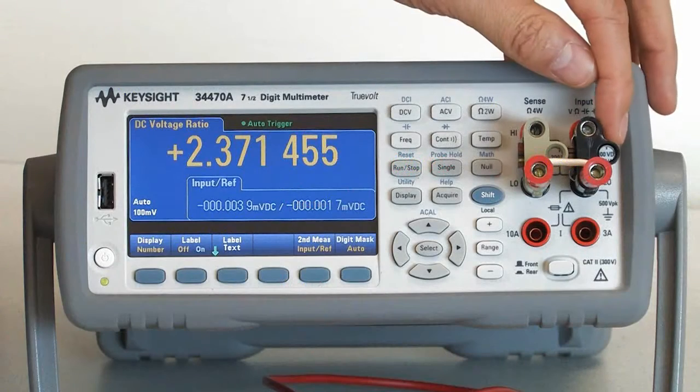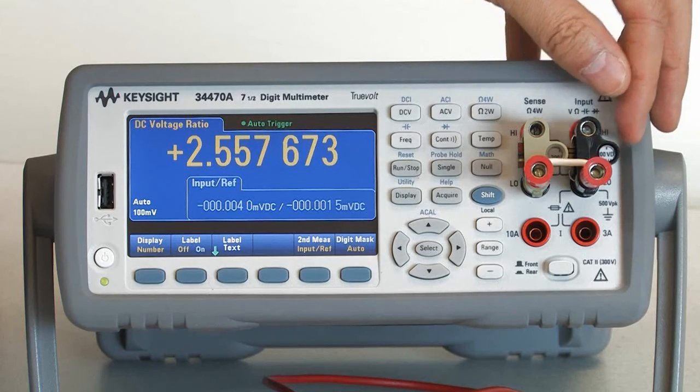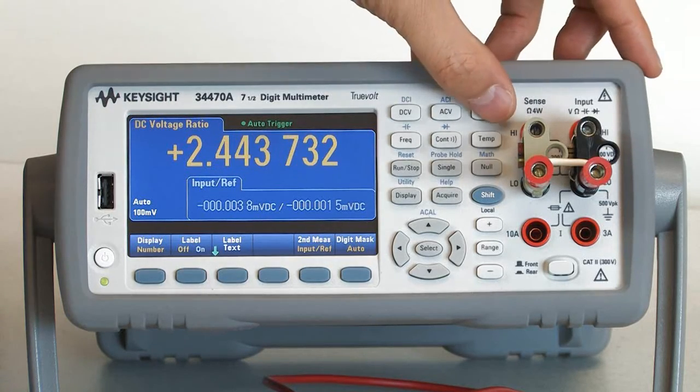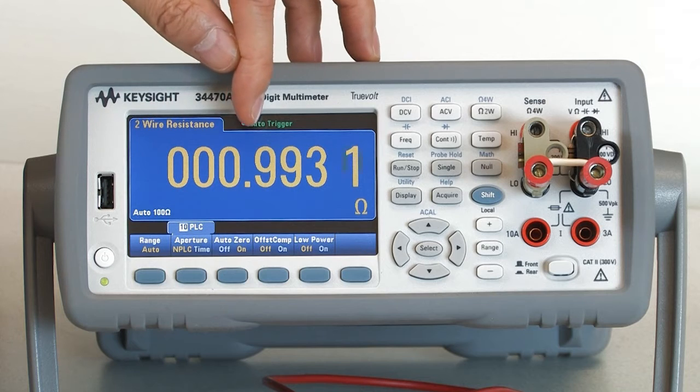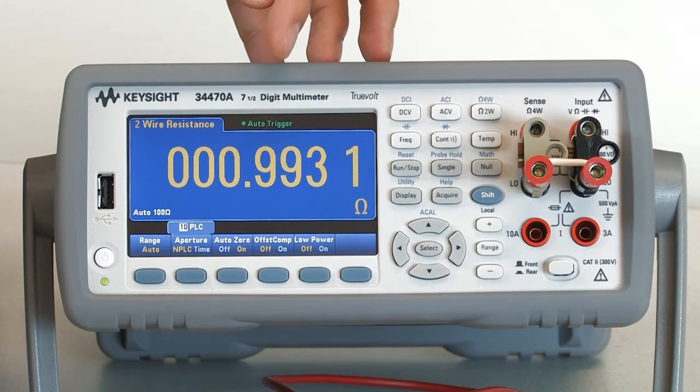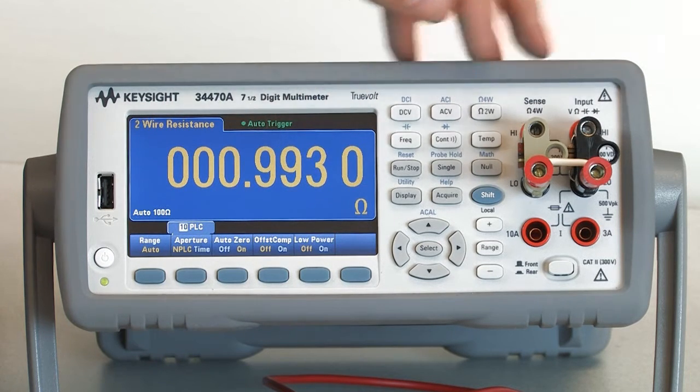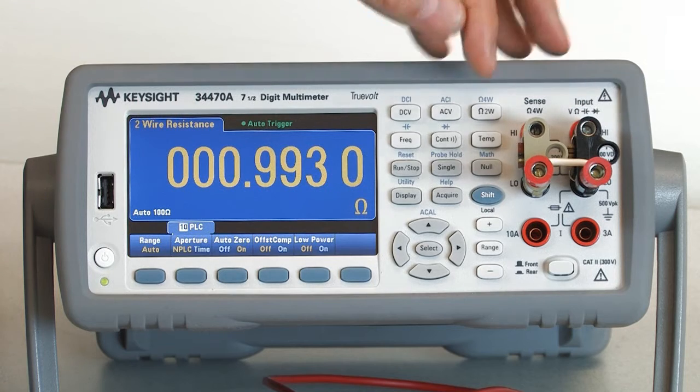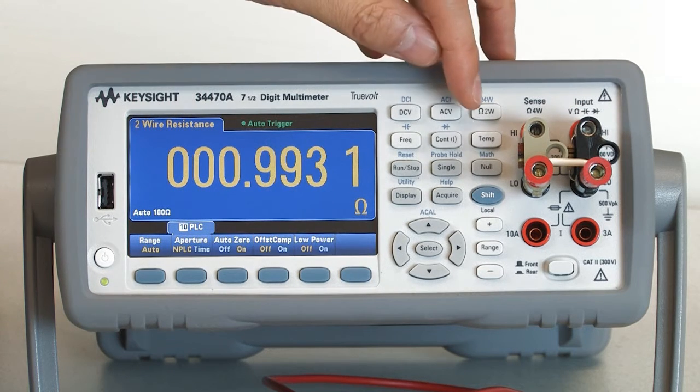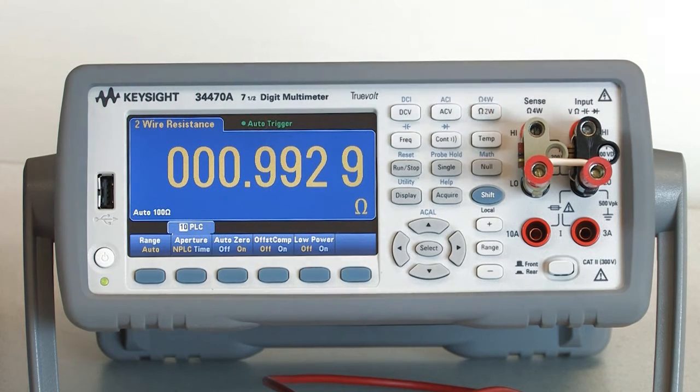Now that I've added my 1 ohm resistor on the input side, I'm just going to take a quick measurement, and you can see that's pretty close to 1 ohm. If you want to be really precise, you can actually make this 1 ohm measurement before and use that as a calculation later on. But for our purposes, we're just going to use 1 ohm.